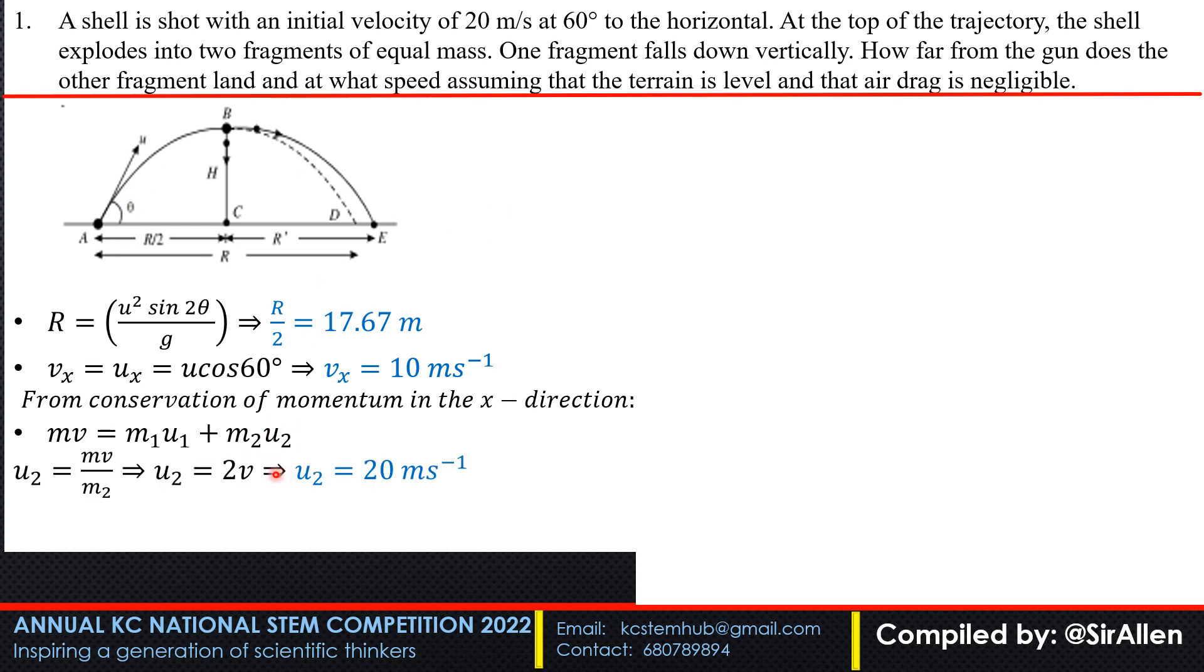Making u2 the subject, we have mv over m2. Remember it divides into two equal parts, so m2 is half of m. Therefore u2 is basically 2v. But this v is in the horizontal direction, which is vx, which is 10 meters per second. So when you multiply by 2, you have u2 equals 20 meters per second.